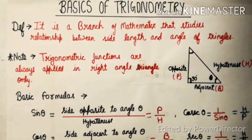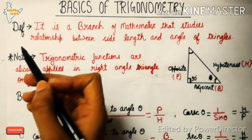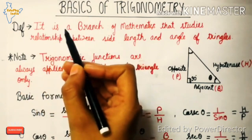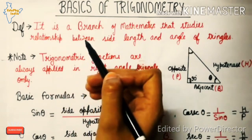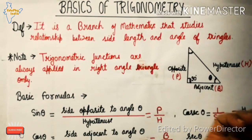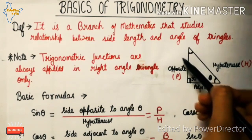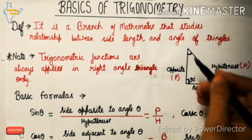Hello dear students. In this session we will discuss the basics of trigonometry before starting section 3.1. It is very important to understand the basics, so let's begin. First, the definition: trigonometry is a branch of mathematics that studies the relationship between side lengths and angles of a triangle. As you can see in this figure, these are the sides and these are the angles.